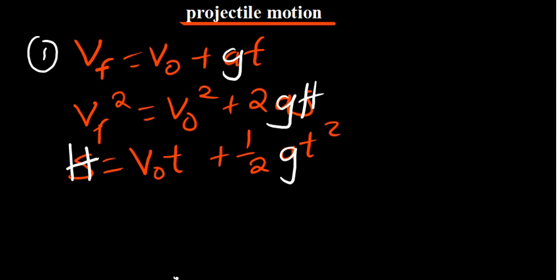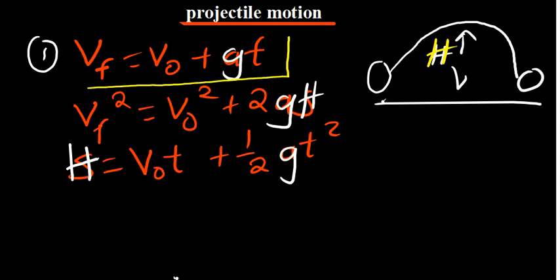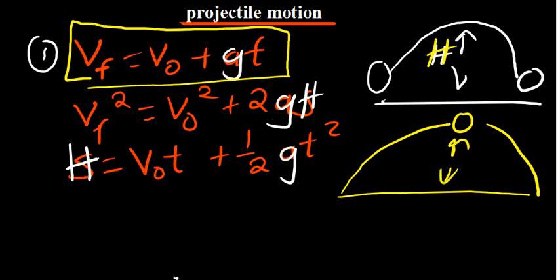I'll start with the first form of projectile motion, where you have something moving symmetrically — from this point it goes to the top and gets down again, and that is our H-max, the maximum height. It's very important to note that when something is going up and reaches maximum height, it will stop moving in the y direction, meaning the final velocity in the y is 0. So at that highest point, the final velocity in y equals 0. We plug in 0 for V-final, and for the initial we put V-naught. Since gravity going upwards is negative, it will be minus Gt.